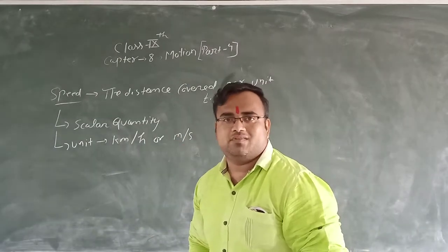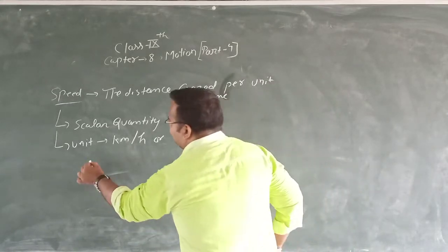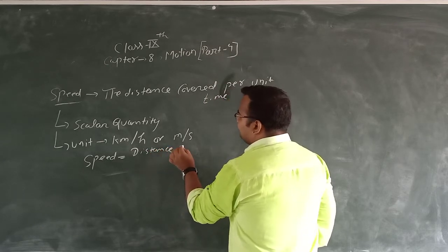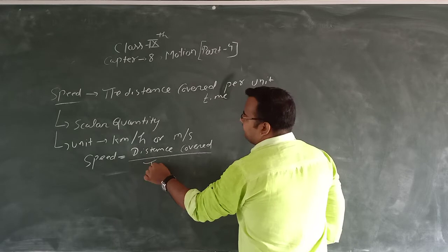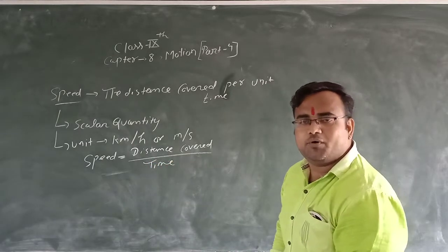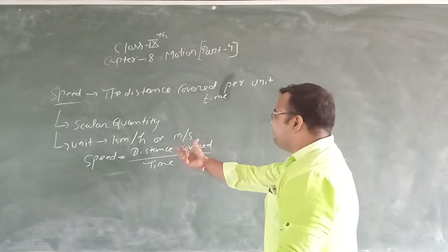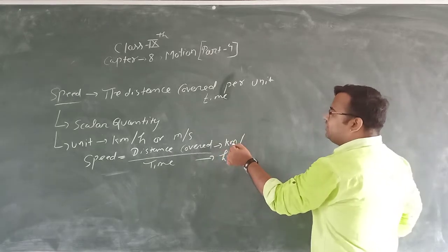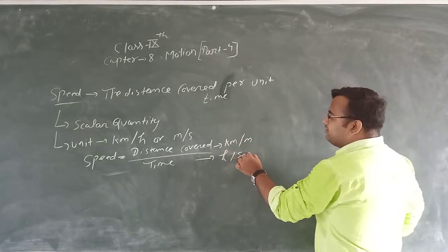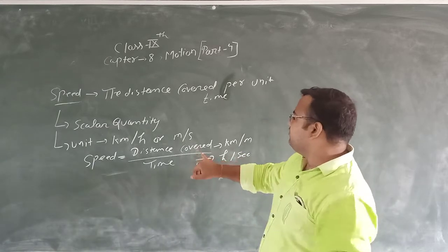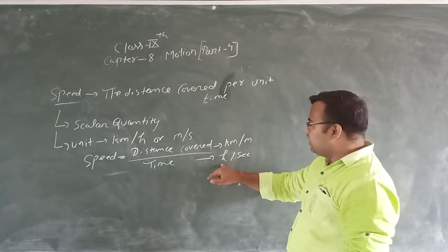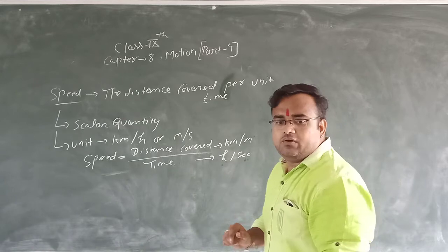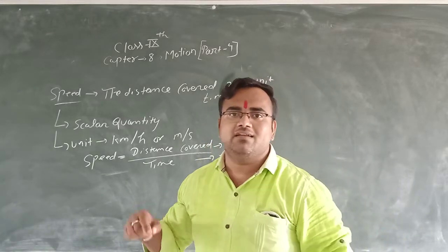The unit of speed is kilometer per hour or meter per second. So the formula for speed is: speed is equal to distance covered upon time. The unit of distance is kilometer or meter, and time can be in hours or seconds, therefore the unit of speed is kilometer per hour or meter per second.